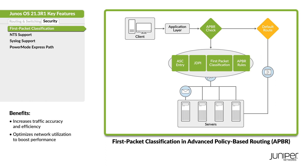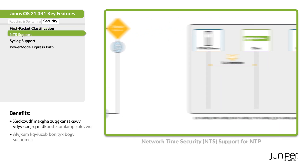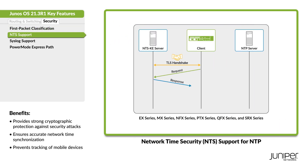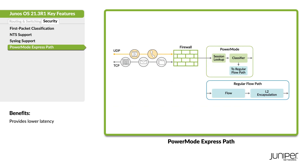Here's what's new on the security side. Use APBR to apply application-specific rules to route traffic through designated paths starting from the very first packet. Use Network Time Security with NTP to secure your network time synchronization. You can securely transport encrypted syslog messages from the control plane over TLS. Use Power Mode Express Path to enhance UDP and TCP firewall throughput performance.